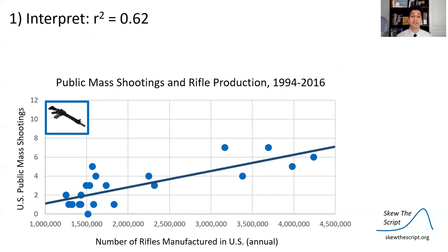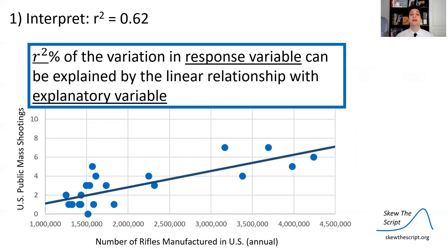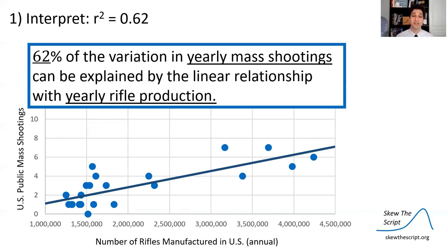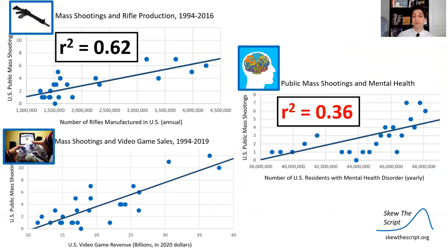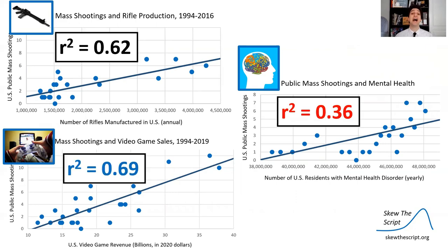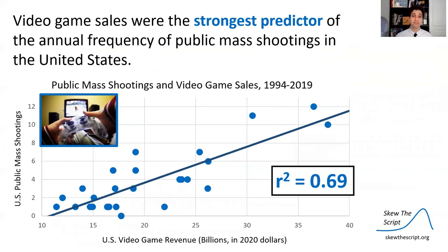In this case, the R-squared value was 0.62 for predicting the number of mass shootings with the number of rifles produced in the United States. That means 62% of the variation in yearly mass shootings can be explained by the linear relationship with yearly rifle production. Looking across the different models: the R-squared value for mental health was only 0.36, the R-squared value for video game sales was a little bit higher at 0.69. So video game sales were actually the strongest predictor of the annual frequency of public mass shootings in the United States.